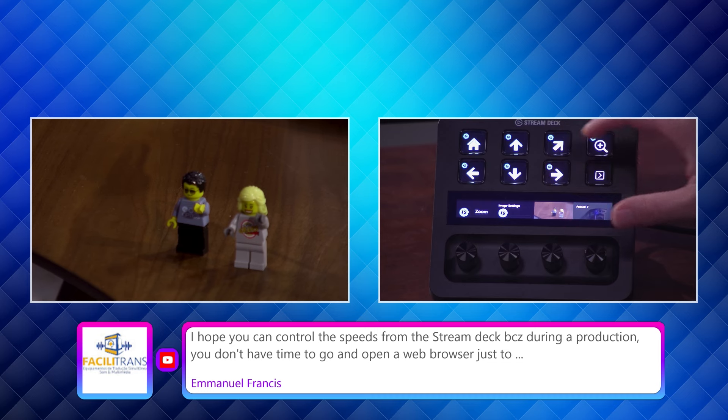And then as soon as you lock in that preset that you like, you can simply tap on the image of the preset and it'll take you right back there. Can you show the diagonal button again for Emmanuel? There is a diagonal button.